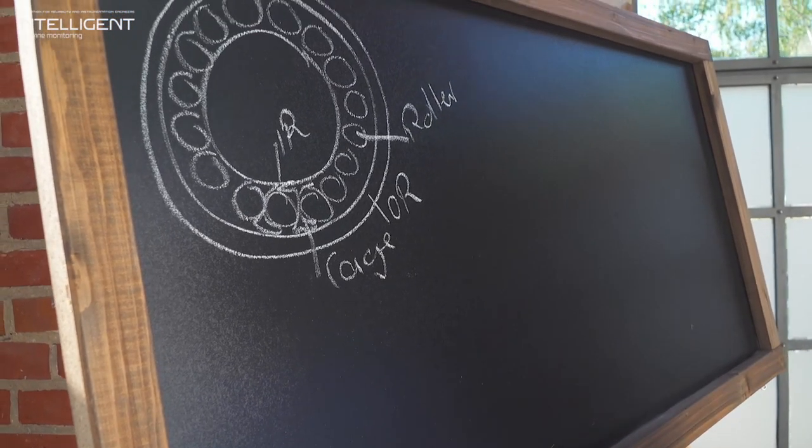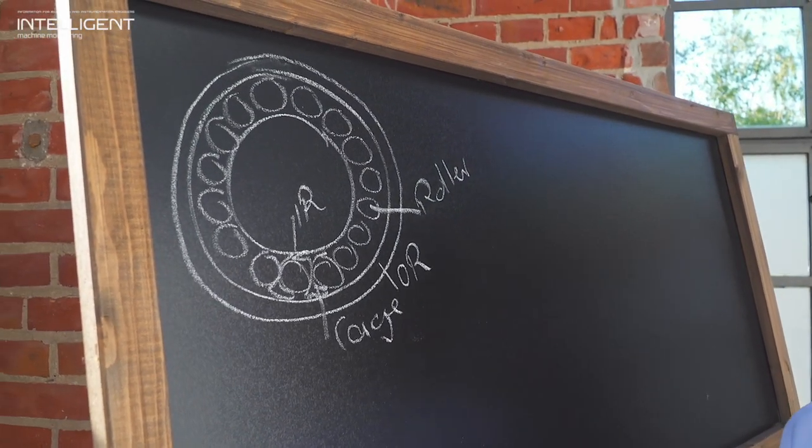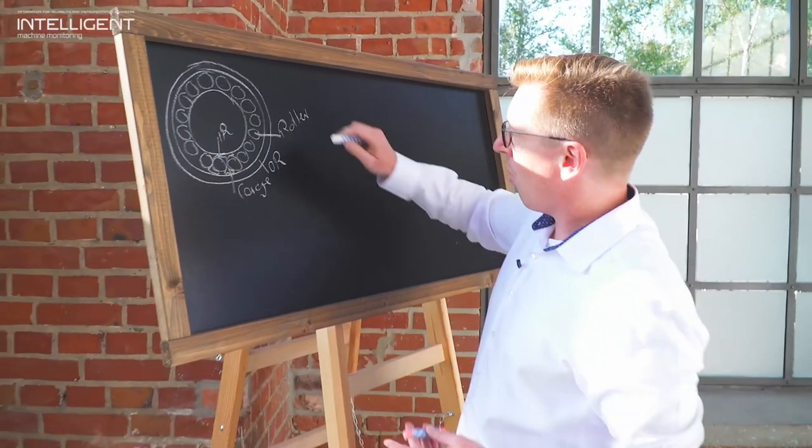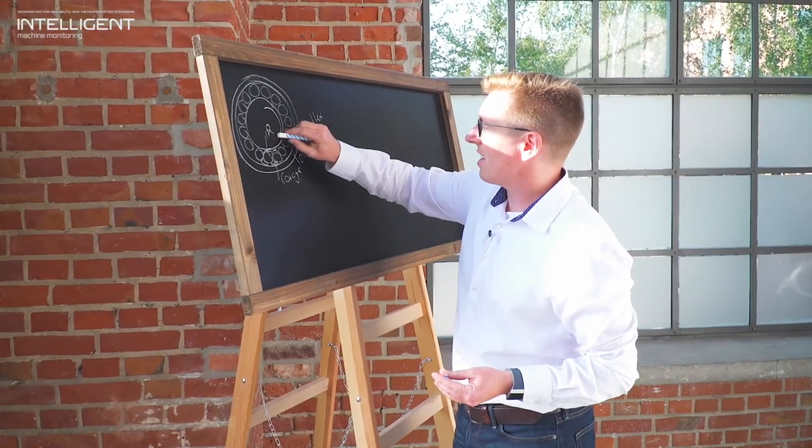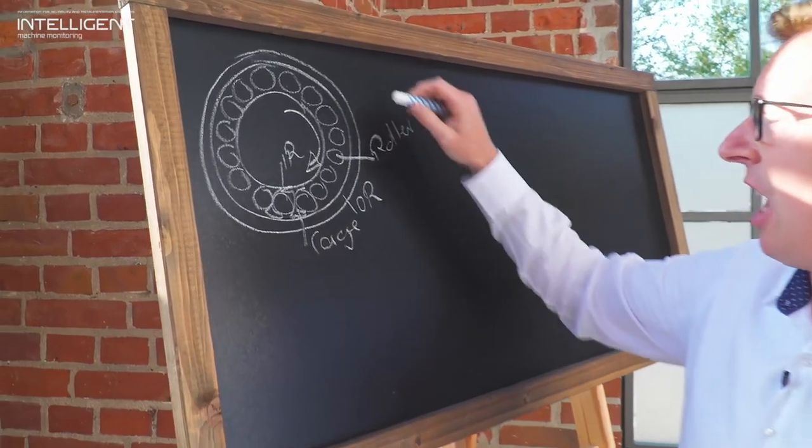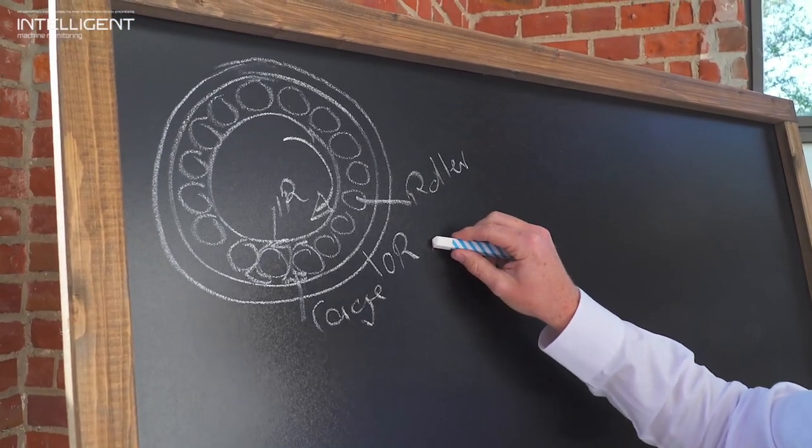Those are the four major components within a rolling element bearing and now there's two more things to know. The inner race is rotating at a given speed, say this way, and the outer race is actually static in its position.